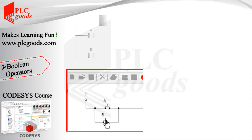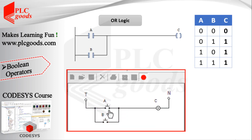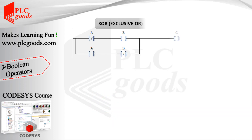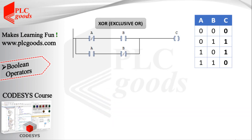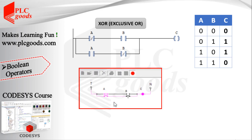Another common logic is OR, where if each input is activated the output will be on. Let's see another logic: XOR. Now the output will be on if only one input is activated. At the bottom, its equivalent circuit is shown for testing. As you see, if I change the state of each input, the output state will change too.